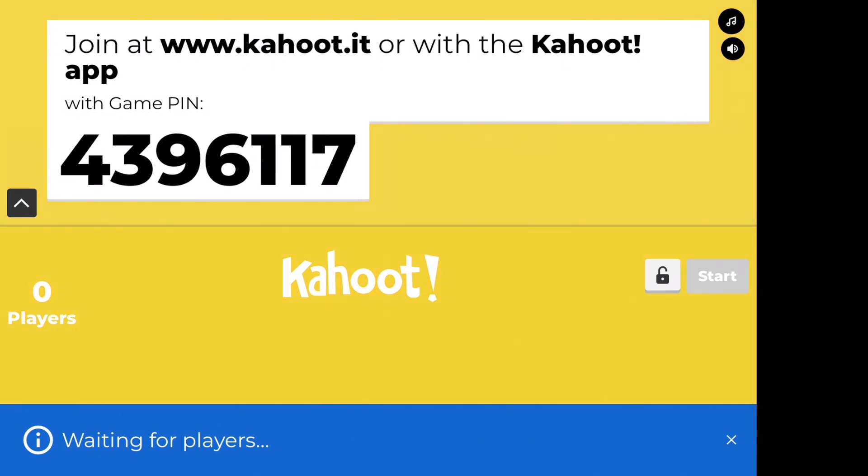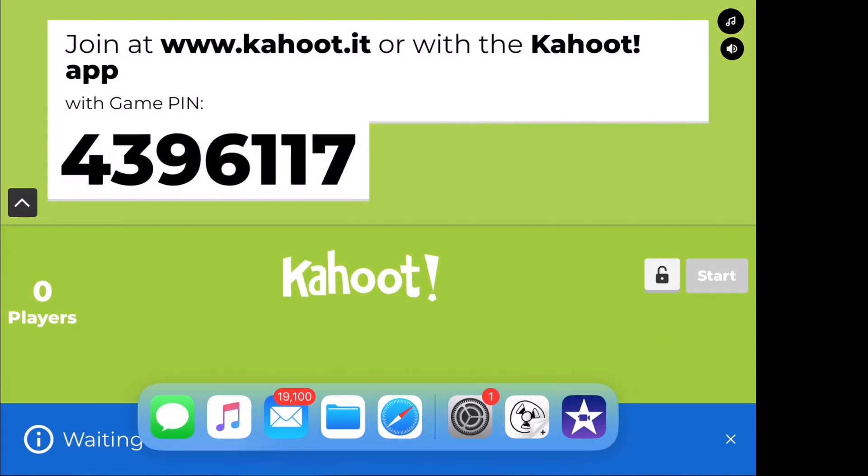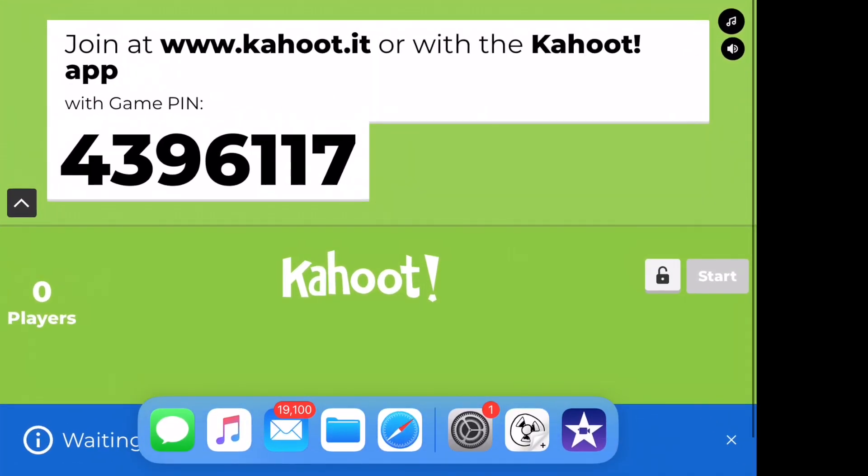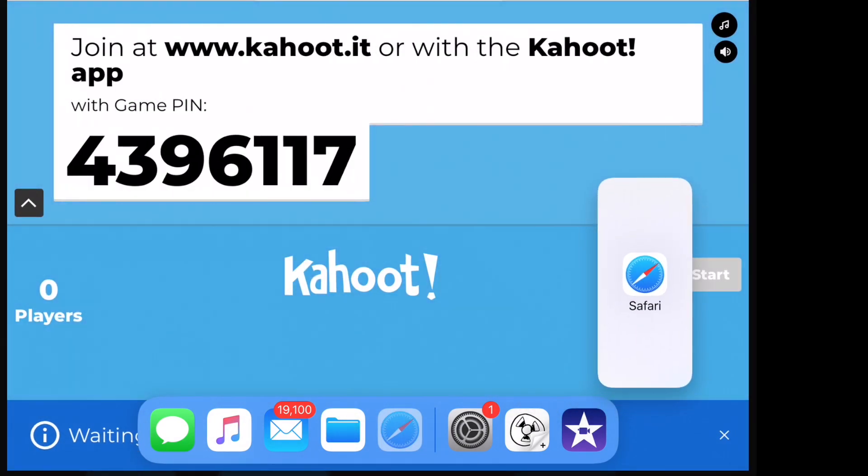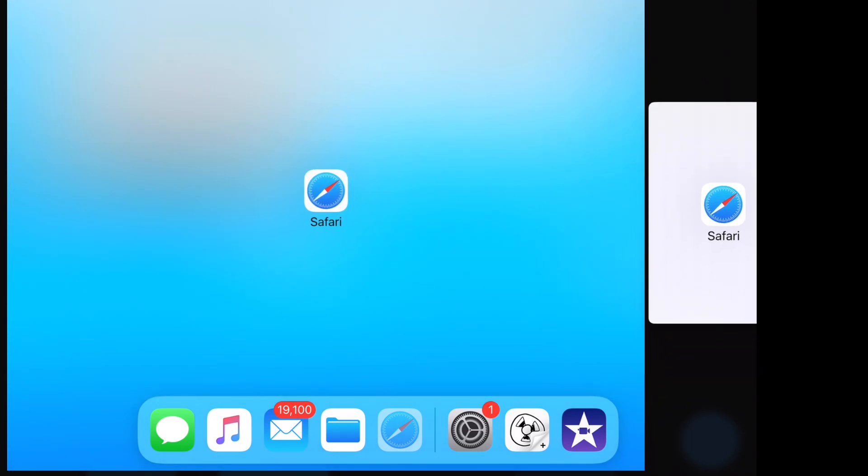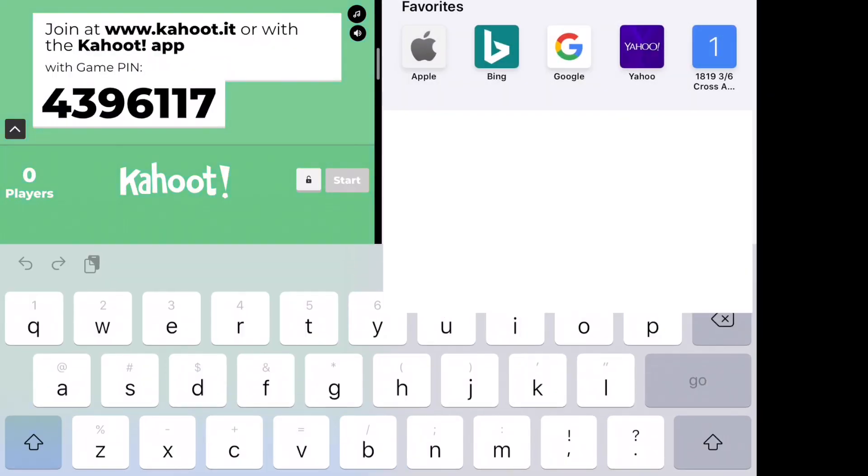Students using iPads can split their screen by placing their finger in the bottom center of the screen and swiping up until they get this menu. Then place their finger and hold it over the Safari app and slide it up and to the right until the screen splits in two.